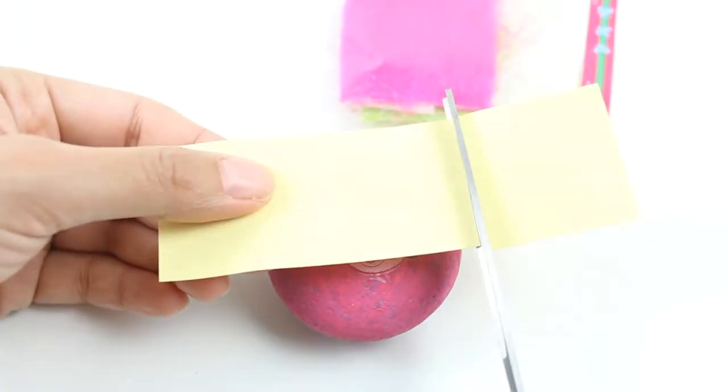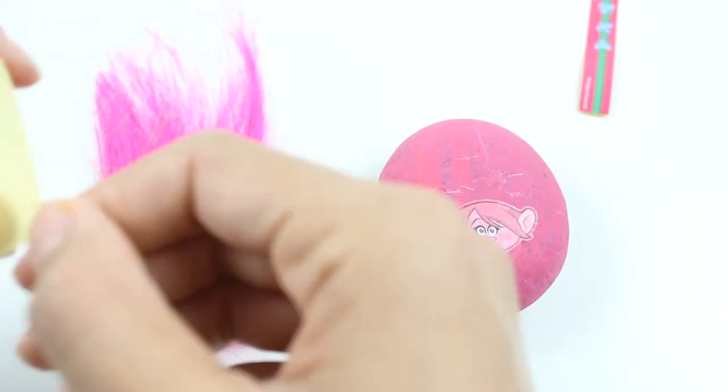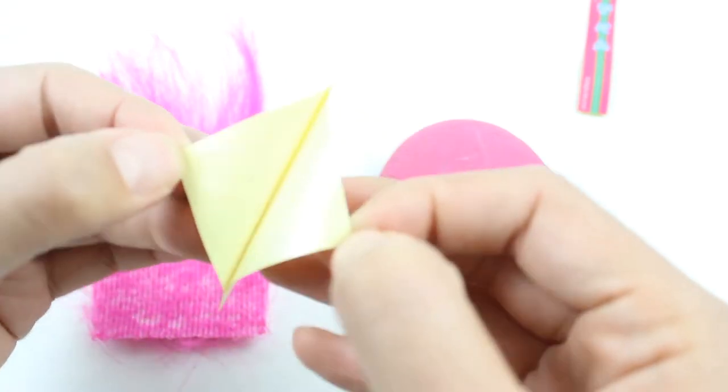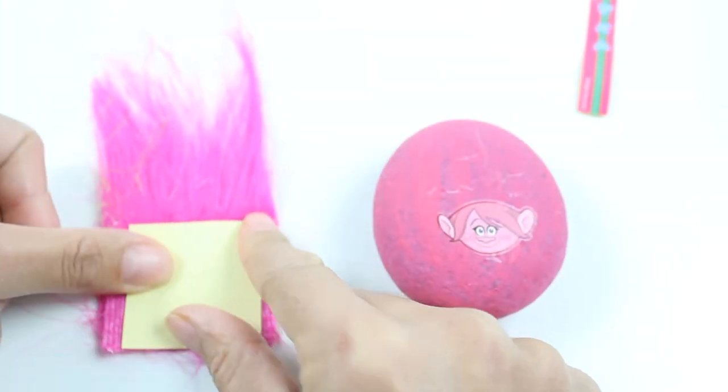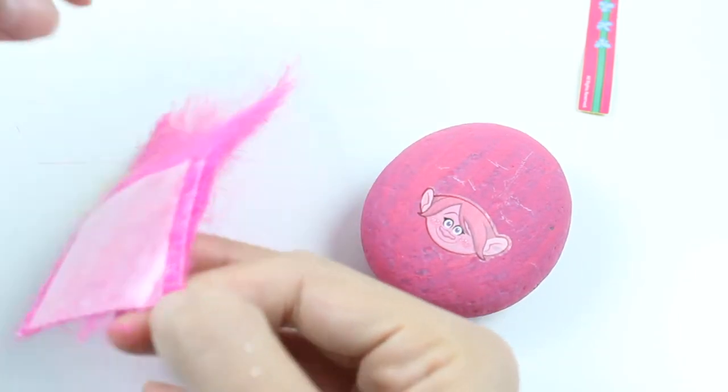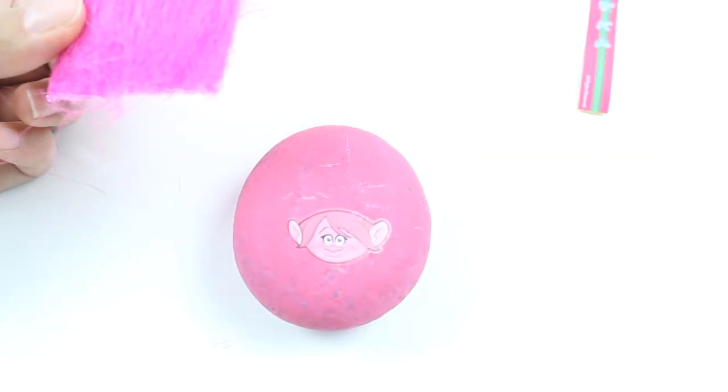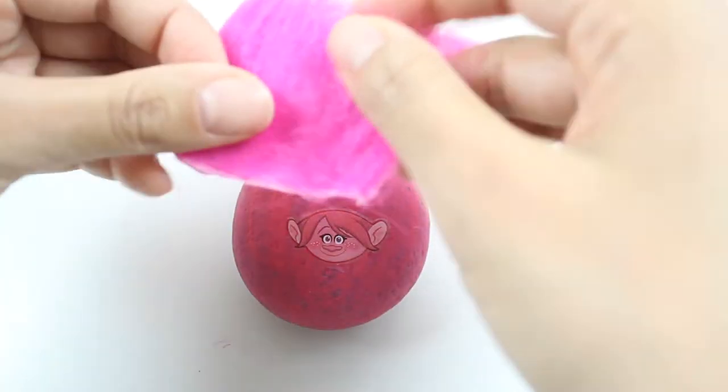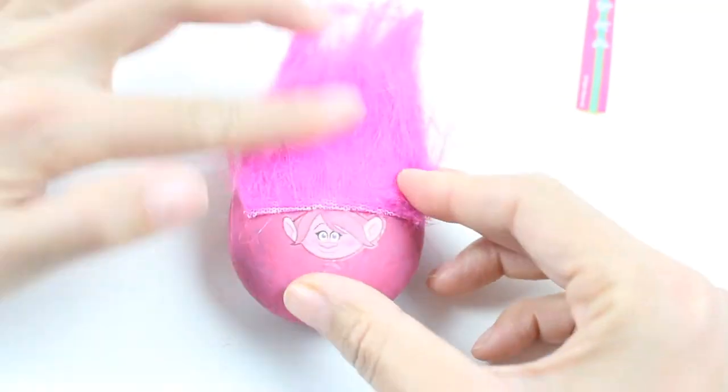So let's cut the double-sided tape and let's put that onto the hair. There we go. And peel off the back so that it can stick onto the rock. And let's carefully place it on.